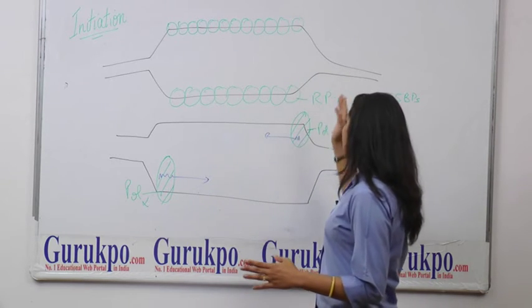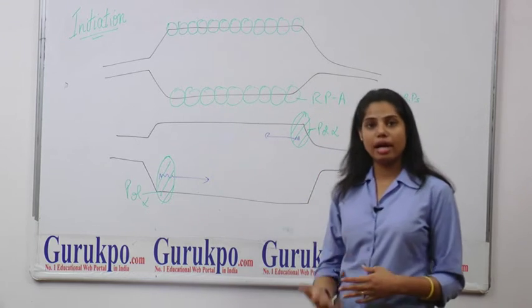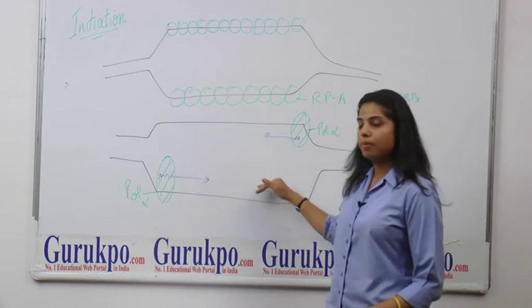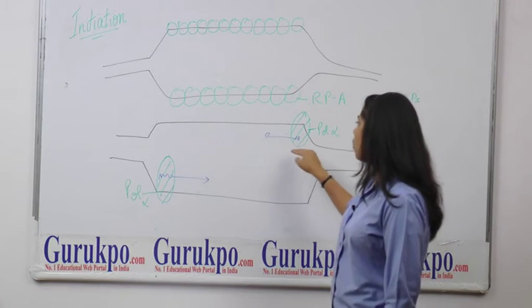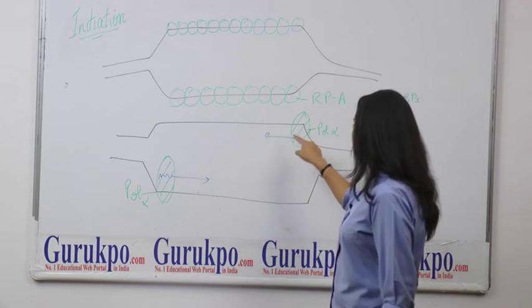Now, after this, the RNA primer is at the both sides and then pol-alpha binds to it. In this step, pol-alpha helps to form the legging strands or the okazaki fragments on 5' to 3' DNA template.